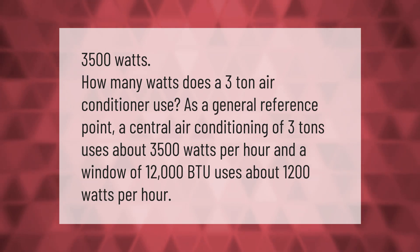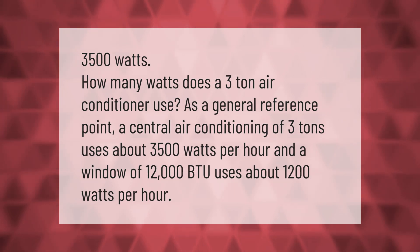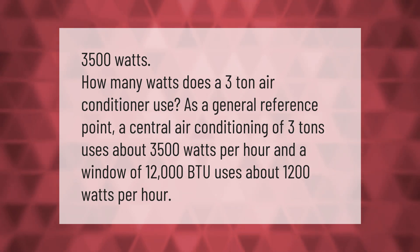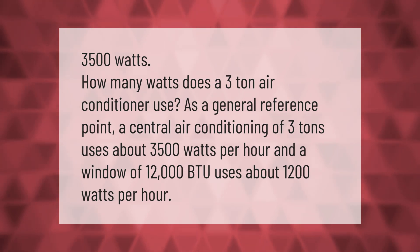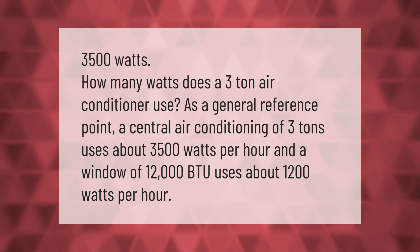How many watts does a 3-ton air conditioner use? As a general reference point, a central air conditioner of 3 tons uses about 3,500 watts per hour, and a window unit of 12,000 BTU uses about 1,200 watts per hour.